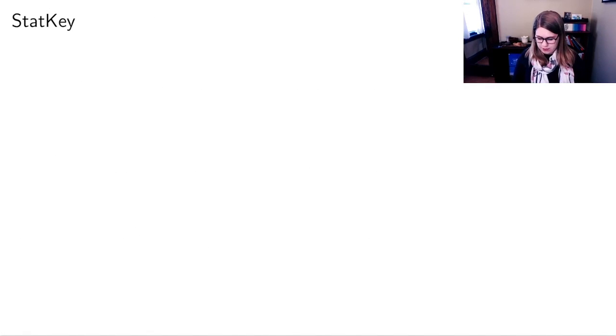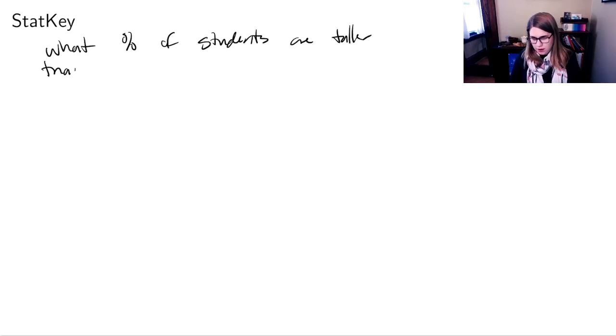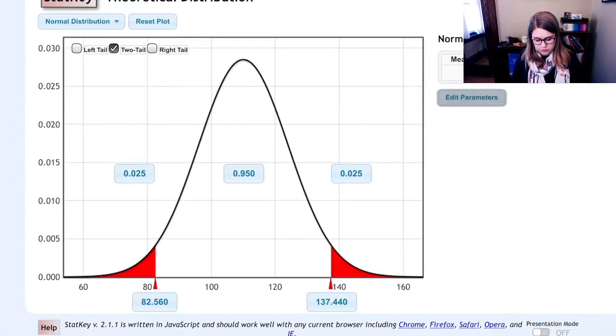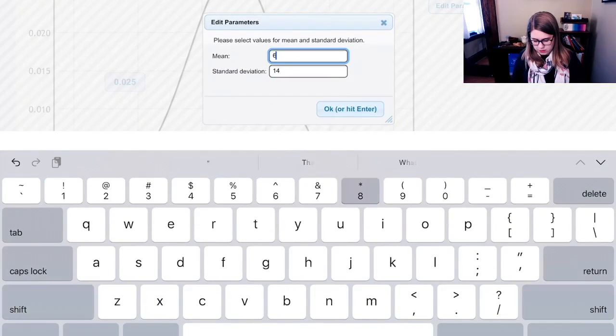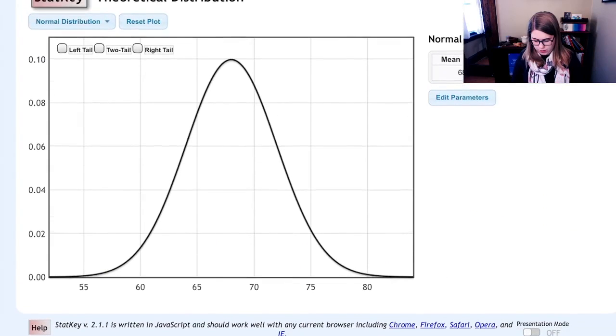Let's see how this might work in StatKey. Let's think about what percent of students are taller than 65 inches. We can do this two ways. One is to just look at StatKey and use the normal 68.4 distribution. Let's try that first. So I'll make it 68 and then 4. And then I'm interested in the number that are taller than 65 inches.